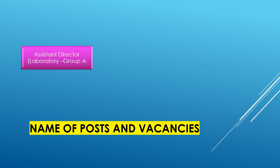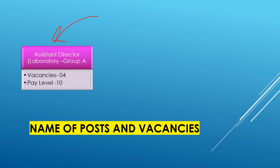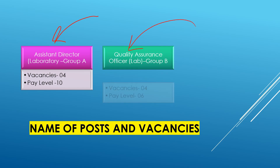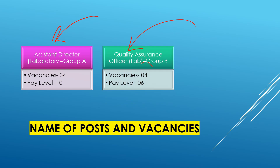The very first post is Assistant Director Group A. Number of vacancies are 4 and pay level is 10. Next post is Quality Assurance Officer Group B, which is a pay level 6 post with a total number of 4 vacancies.